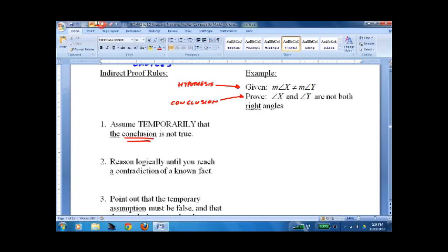And this is the conclusion. So, we're going to assume temporarily the conclusion is not true. So, we actually write that. It's a paragraph proof. We write it out. Assume, and I'm going to abbreviate because there's a lot of writing here. Assume that it's the opposite of that. Angle x and angle y are both right angles.